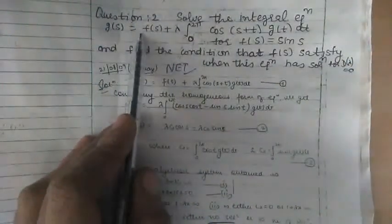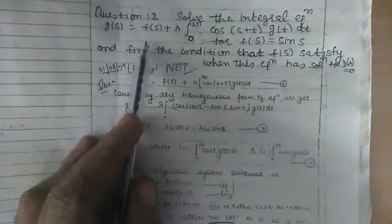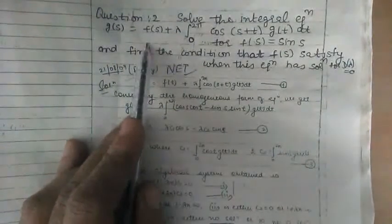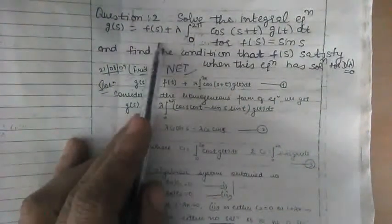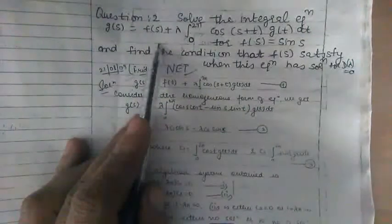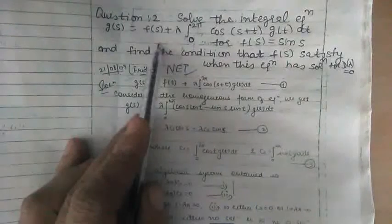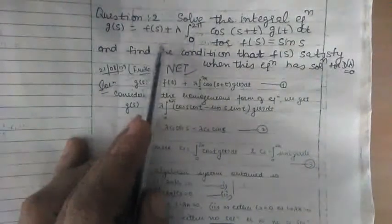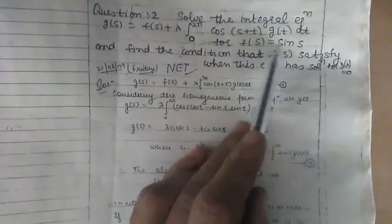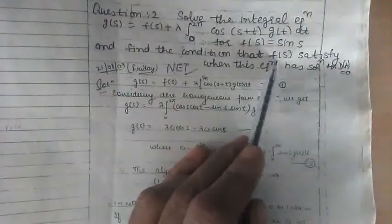We will solve this problem in two cases. The first case is when the determinant of the corresponding algebraic system is not equal to 0, in which case we get a unique solution. In the second case, when the determinant equals 0, we use the Fredholm alternative theorem, obtaining a solution by checking the orthogonality conditions of f with the solutions of the corresponding transposed homogeneous equation. First, let us solve the corresponding homogeneous equation.